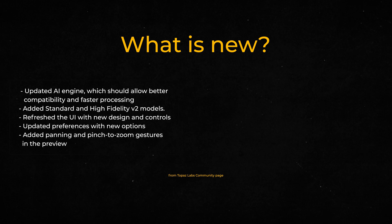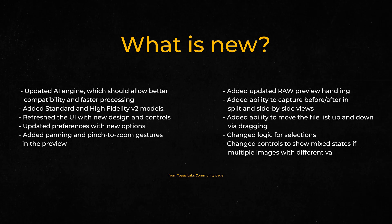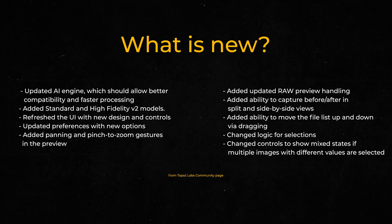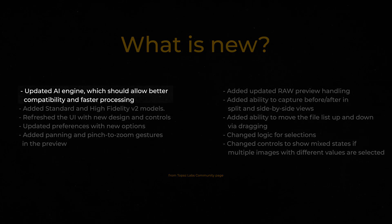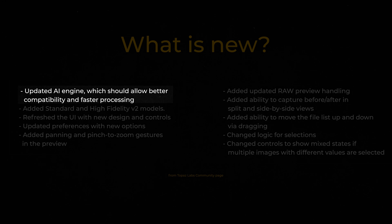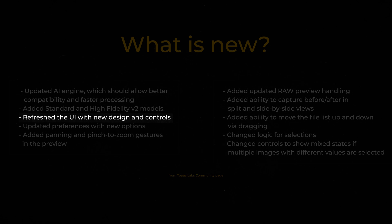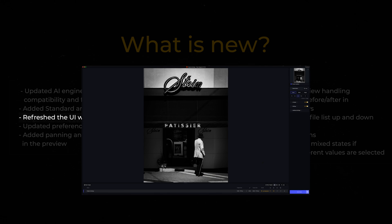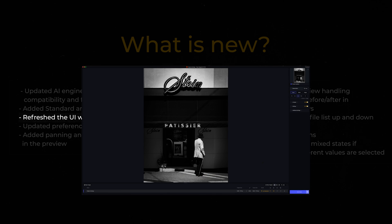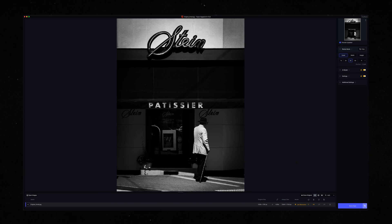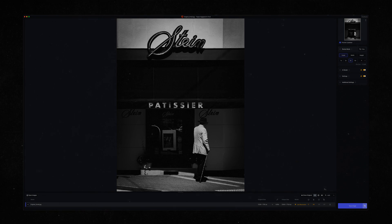Here is the whole list of new things that Gigapixel AI version 7 has. I think the biggest one is the renewed and faster AI — it's a lot faster than the previous version. The new UI is quite similar to Photo AI, so it's more familiar to use. You have the tools in the same place and it works the same way as Photo AI, though the tools are slightly different.